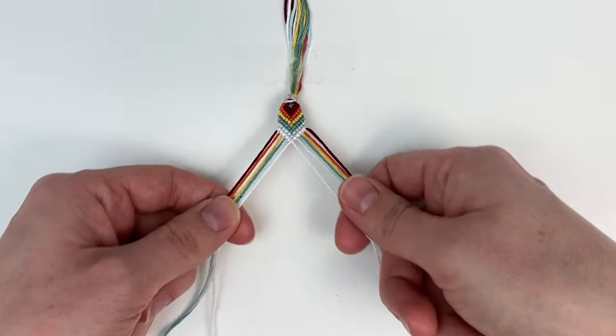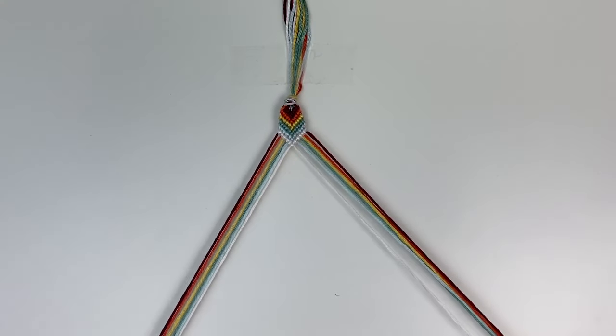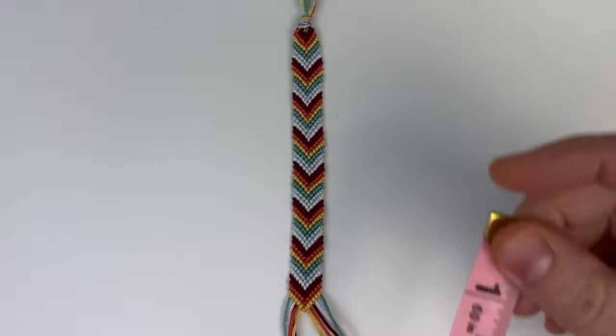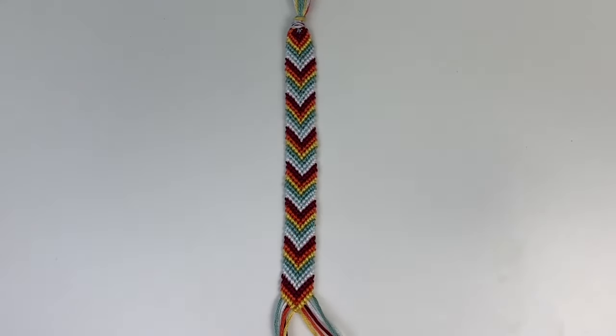Here's how it'll look once you've done one row of each color. And then you just continue repeating that until you have the desired length for your bracelet. I did mine about five inches long.